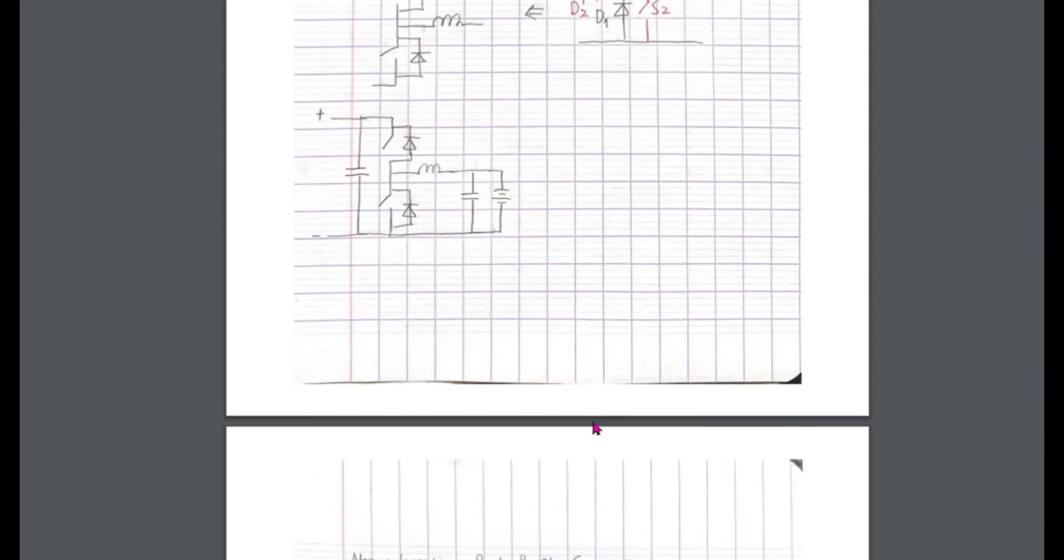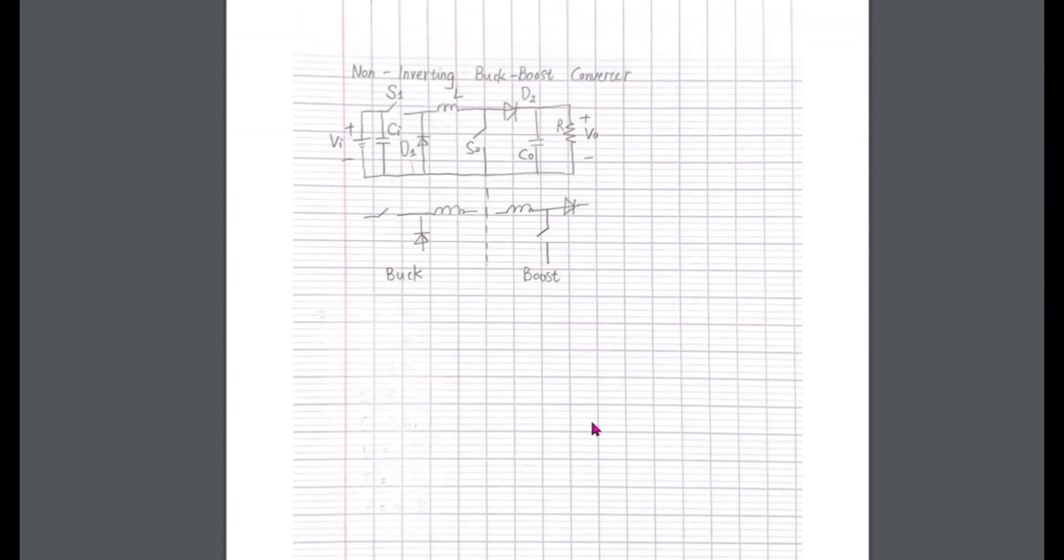The second possibility is to put the buck and boost in a series. We close the S1 and S2 at the same time so that the inductor gets charged. Then open S1 and S2, let the inductor current continue to flow through the load. This way we don't need to invert the output voltage polarity, so it's called non-inverting buck-boost.